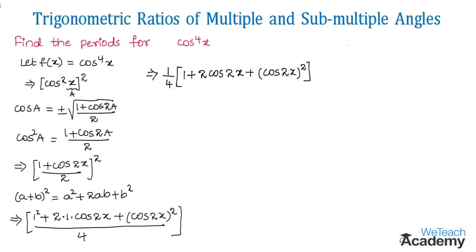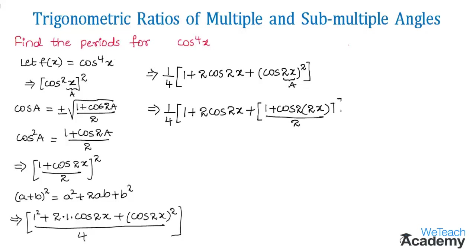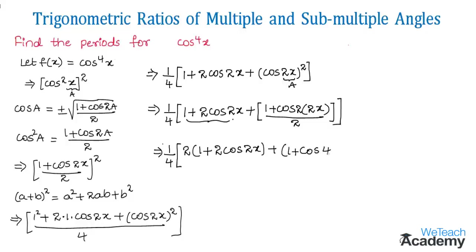This cos²(2x) is again in the form of cos²a. Using the formula cos²a = (1 + cos 2a)/2 with a = 2x, we get (1 + cos 4x)/2. Taking the LCM, we get (1/4) · (2(1 + 2cos 2x) + 1 + cos 4x).